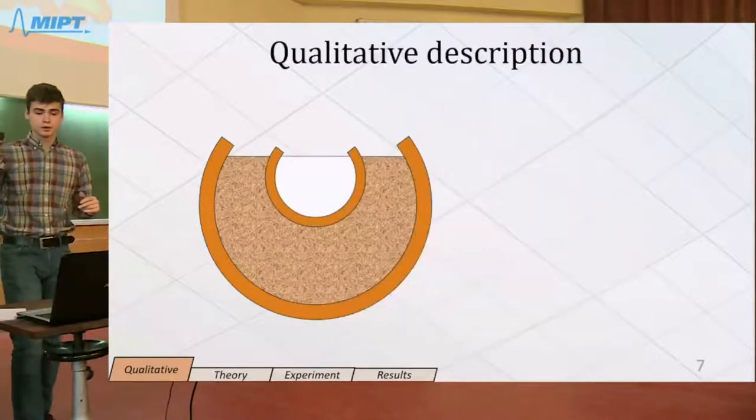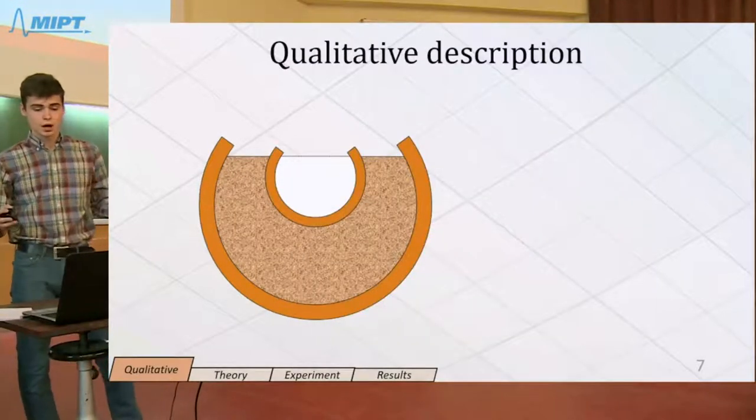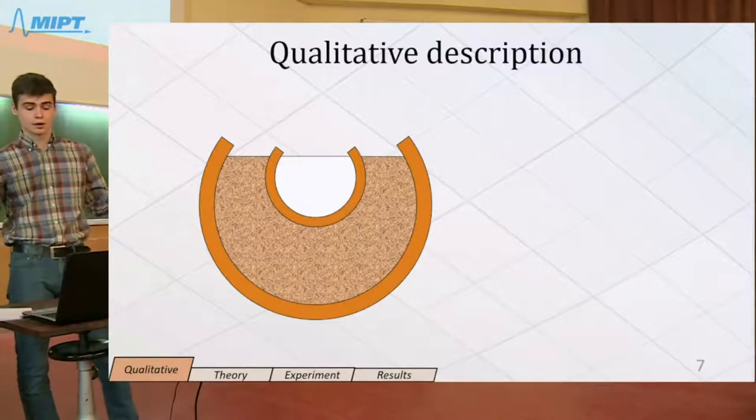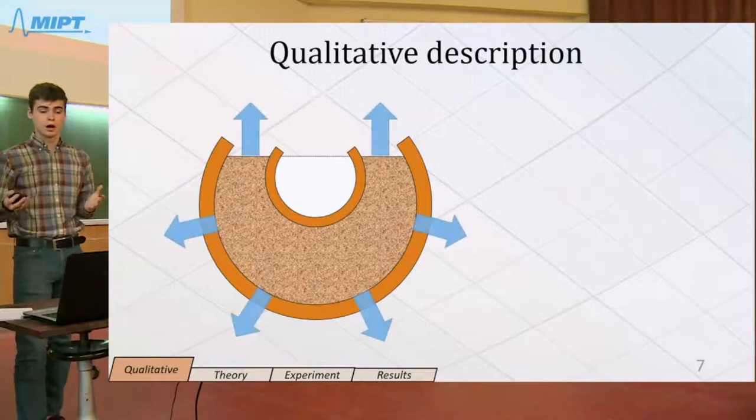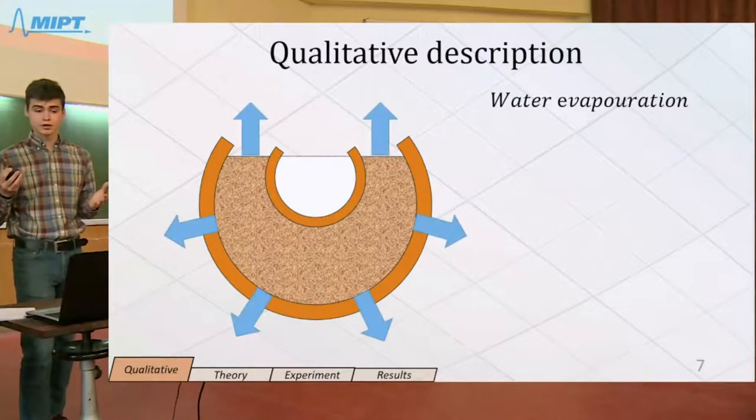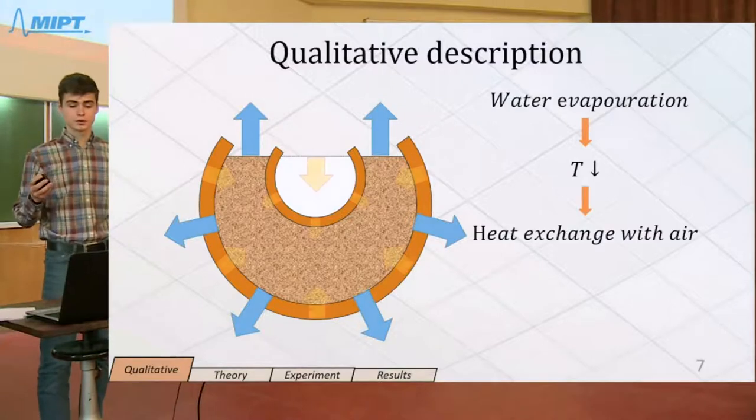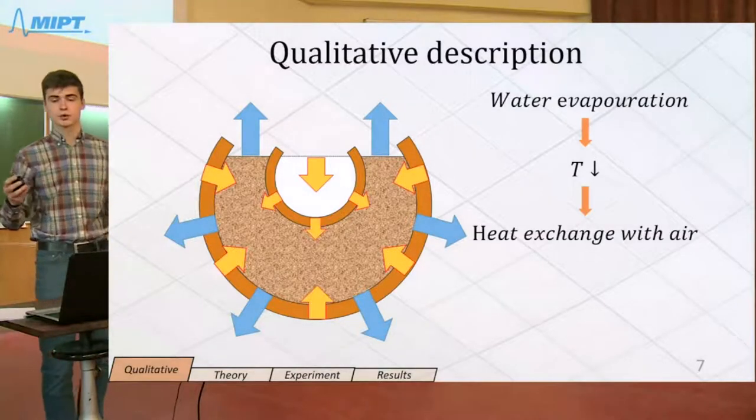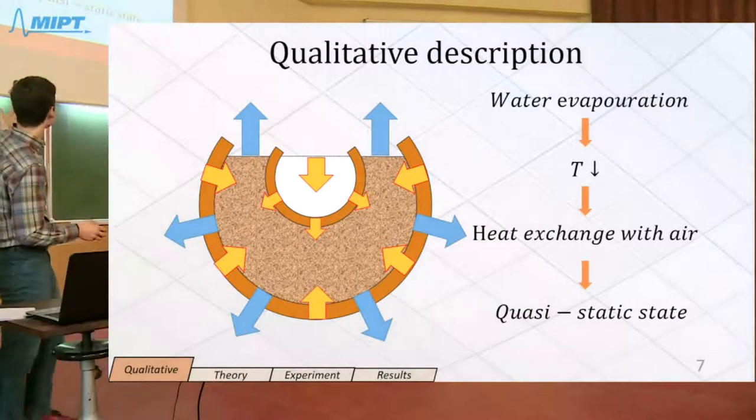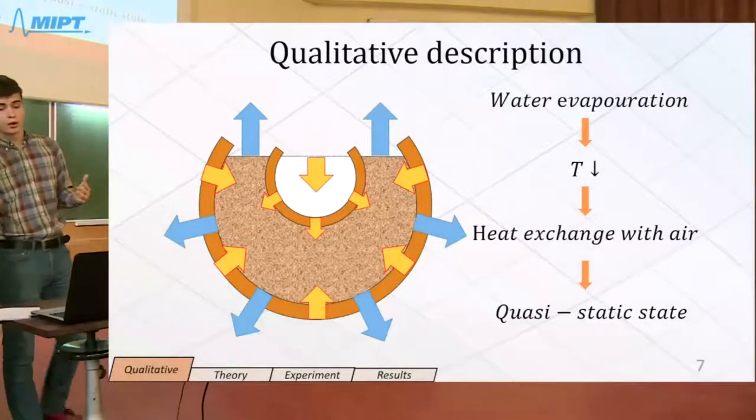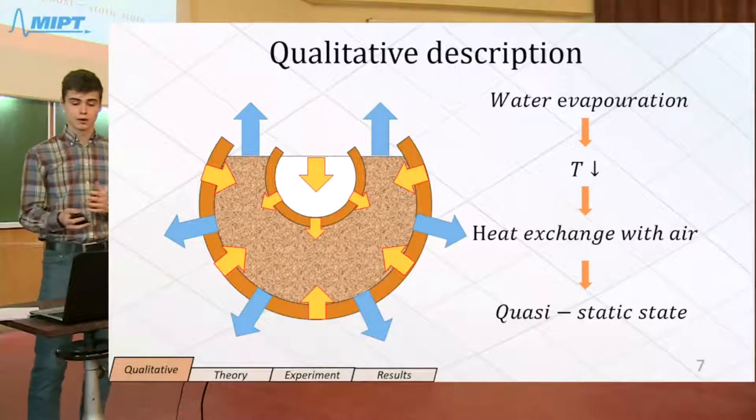Let's discuss the qualitative description in terms of heat fluxes. Our system cools because of water evaporation. Water starts to evaporate, temperature decreases. This temperature decrease causes heat exchange with air to begin, and after some period of time these fluxes will be equal to one another. So we will find the quasi-static state.